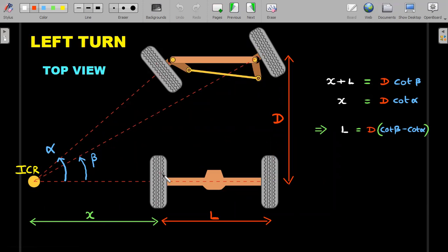You can eliminate x by subtracting these two and directly get the value: the distance between the two tires L is equal to capital D, which is the distance between the front and rear tires, multiplied by the difference of cot of the angles. You could see in this Ackermann steering mechanism, if you're taking a left turn, the left tire should turn by a greater angle as compared to the right tire.